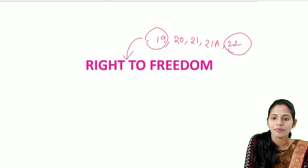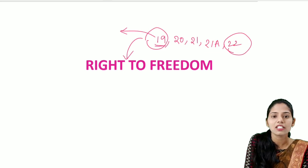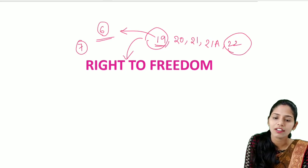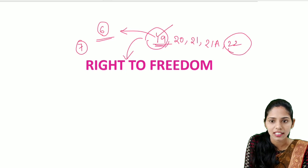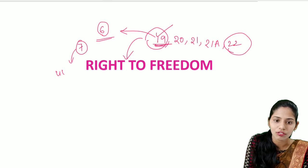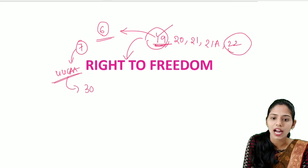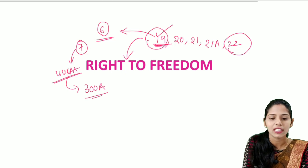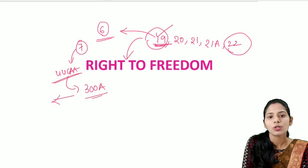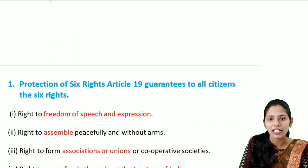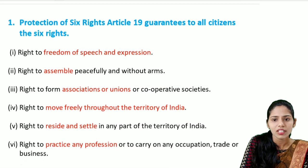Article 19 guarantees mainly six rights to citizens. In the original Constitution there were about seven rights under Article 19, but through the 44th Constitutional Amendment Act, one right was deleted and made into a legal right, placed into Article 300A of the Indian Constitution — that is the right to property. So let's get started with our discussion.